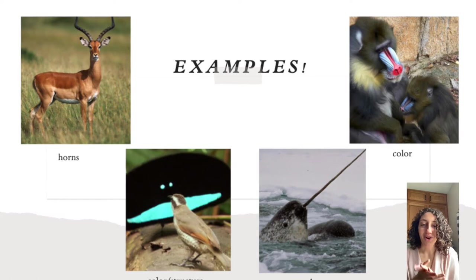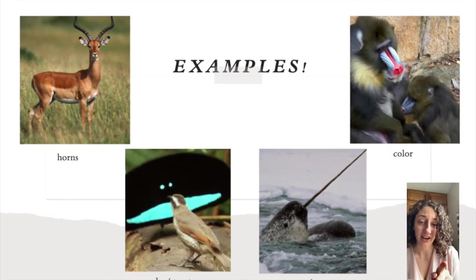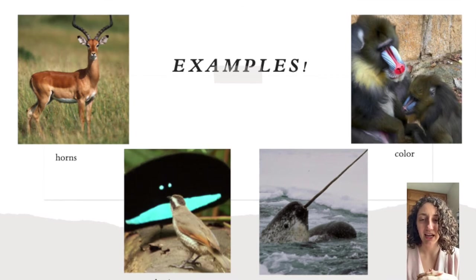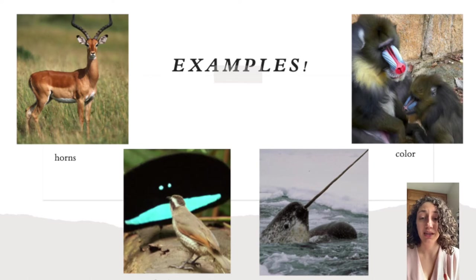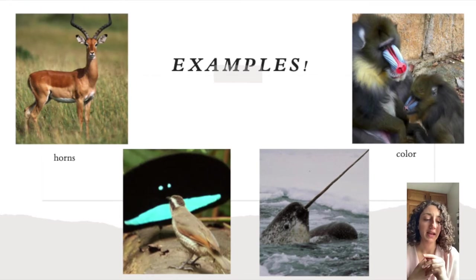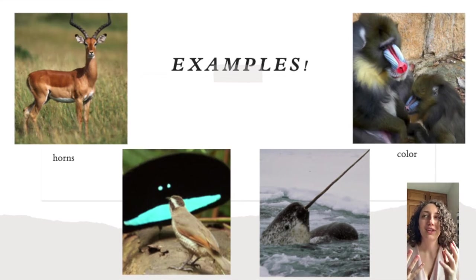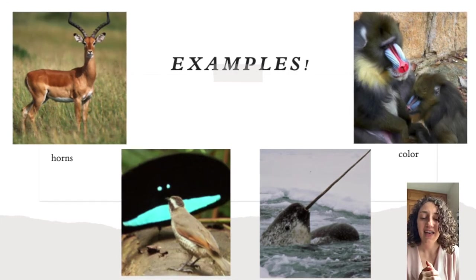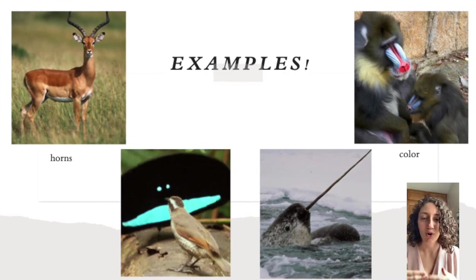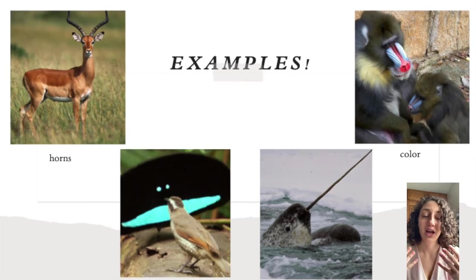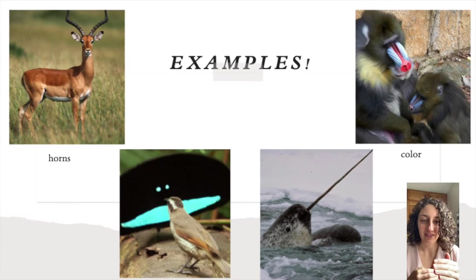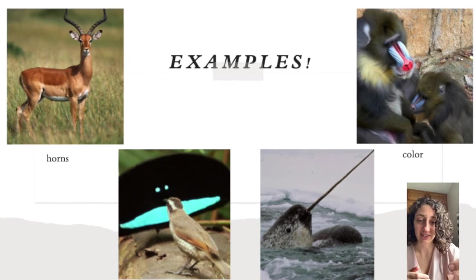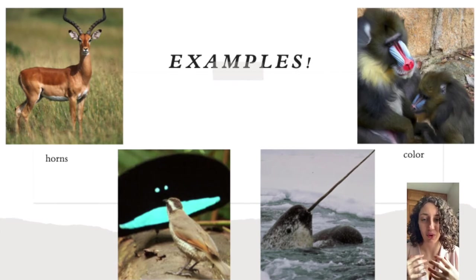With the narwhal, males have very long tusks, while females typically never grow a tusk. There are different theories about why narwhals have tusks — it could help break ice or harm enemies — but scientists mostly think these tusks are a secondary sexual characteristic. The longer or stronger the tusk, the higher the likelihood that male will reproduce, as females are attracted to narwhals with impressive tusks.